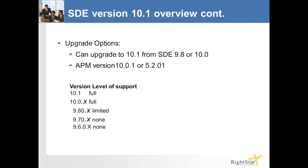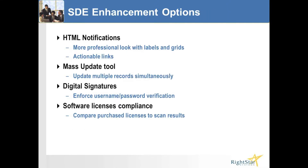For APM users, the 10.1 look and feel is supported on specific APM versions - it must be 10.01, not 10.00, and 5.2.01, not 5.2.0. As for support contracts, whether through BMC or L1 support through RightStar, both 10.1 and 10.00 have full support available. Version 9.8 users will have limited support going forward, and there is no more support on 9.7, 9.6, or any earlier versions. Keep this in mind when planning your upgrade to at least 10.00, if not 10.1.